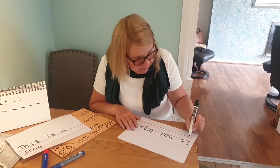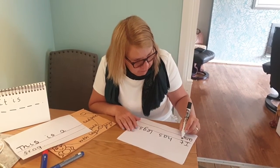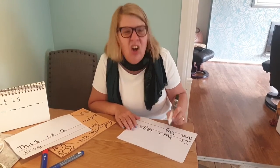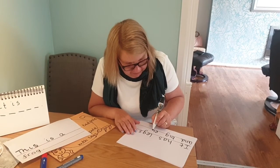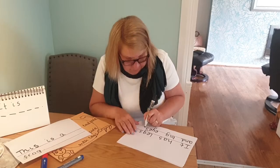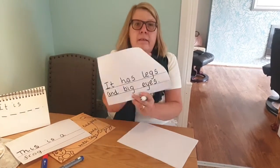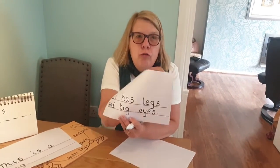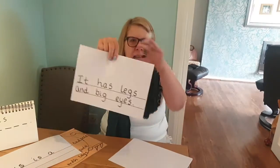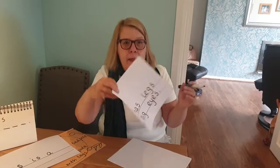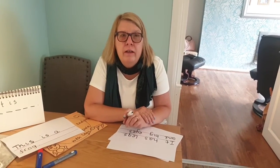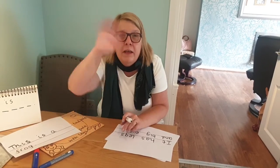Again, you could draw a picture of your frog up there. Just read it back to make sure it's correct: 'It has legs and big eyes.' Draw a nice big frog up there. Okay, hope you have fun drawing your life cycle of a frog and writing sentences. Bye for now.